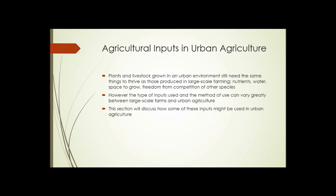Plants and livestock grown in an urban environment still need the same things to thrive as those produced in large-scale farming: nutrients, water, space to grow, freedom from competition of other species. But the types of inputs used and the method of use can vary greatly between large-scale farms and urban agriculture. Much of that difference is due to the scale alone. This section will discuss how some of these inputs might be used in urban agriculture.